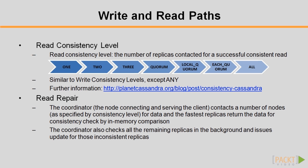During a read, the coordinator — which is the node that happens to be connecting and servicing the client — contacts a number of nodes as specified by the consistency level for data, and the fastest replicas will return the data for consistency check by in-memory comparison. As it isn't a dedicated node, it makes Cassandra lack a single point of failure. It also checks all remaining replicas in the background.